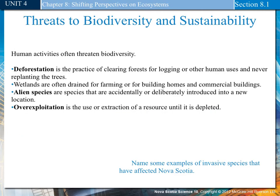Threats to biodiversity and sustainability. Human activity often threatens biodiversity. Deforestation is the practice of clearing forests for logging or other human uses without replanting trees. Wetlands are often drained for farming or for building homes and commercial buildings. Alien species are species accidentally or deliberately introduced into new locations. Over-exploitation is the use or extraction of resources until they are depleted.